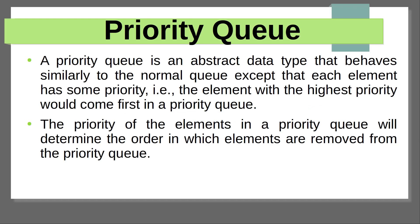The priority queue is same as the queue. But what is the difference between the queue and priority queue? The priority queue consists of each and every element having an individual priority with itself. Based on the priority, it will be processed. But the queue has no priority. This is the main difference between the queue and the priority queue.